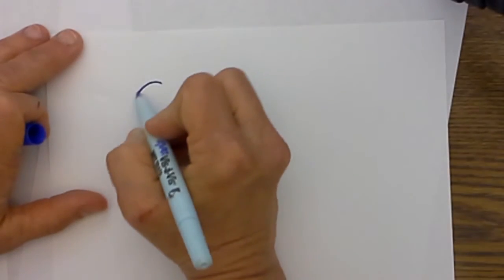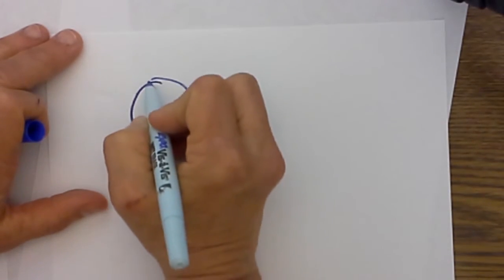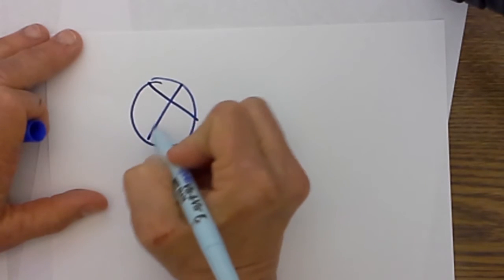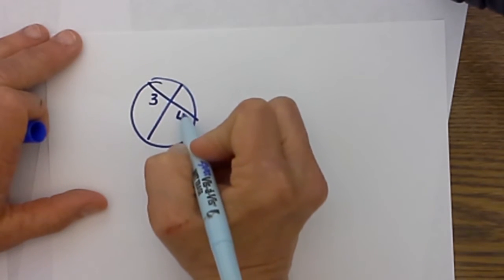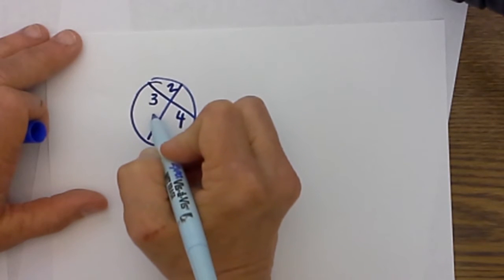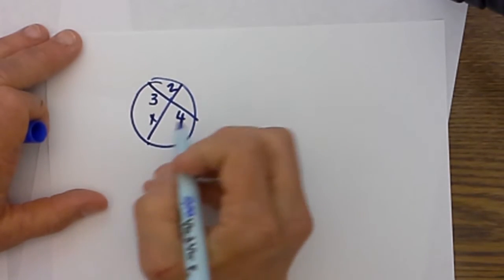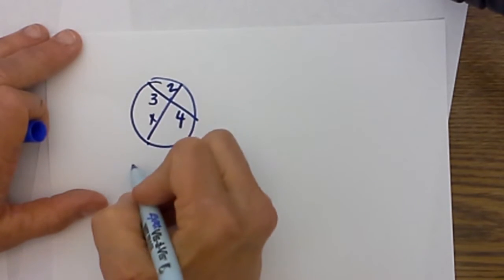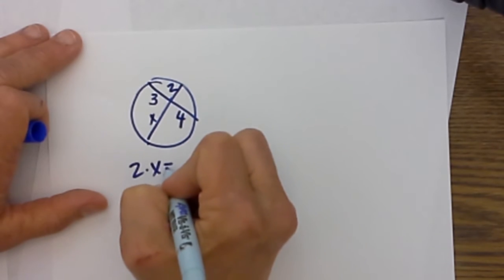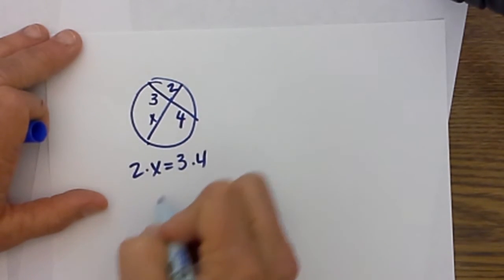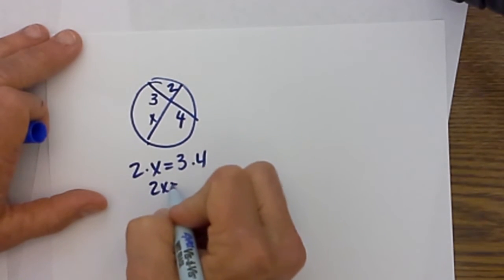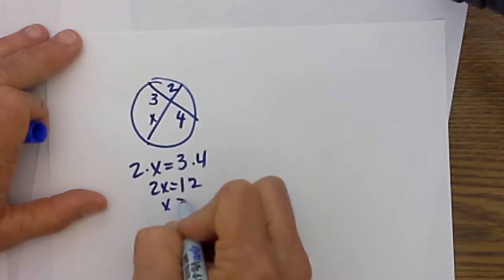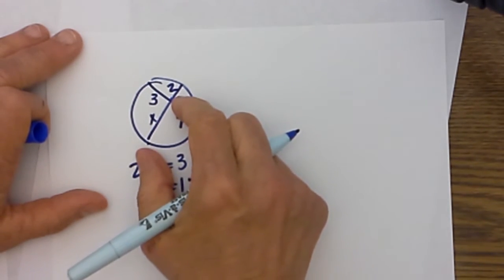Let's do an example of a chord-chord. We have two chords. So let's say this segment is 3, this segment is 4, and this segment is 2. We don't know this longer one. Based on the chord-chord we are going to take 2 times x and set it equal to 3 times 4. So we get 2x is equal to 12 and x is 6. So that means this segment is 6.